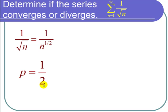For the p-series test, we compare p with 1. If p is less than or equal to 1, the series diverges. If p is greater than 1, it converges.